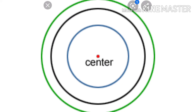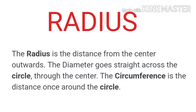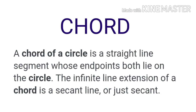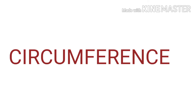Now we are going to review the key points. The center of the circle is the fixed point from which all points on the circle are at equal distance. The line segment from the center to any point on the circle is called the radius. A chord is a line segment joining any two points on the circle. The chord that passes through the center is called the diameter. The perimeter or boundary of the circle is called the circumference.